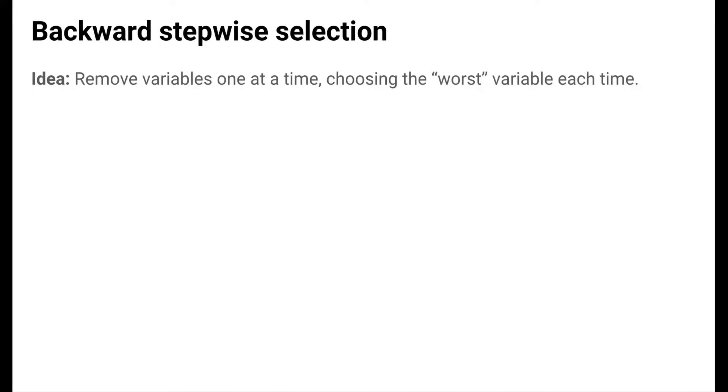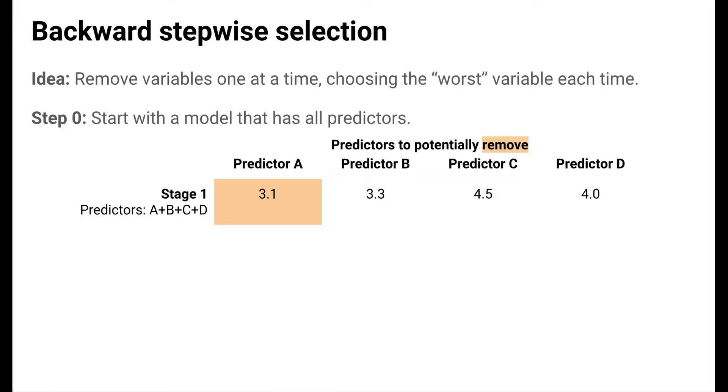Backward stepwise selection is similar to forward, but instead removes variables one at a time, each time removing the worst or least useful variable. Just like best, worst refers to the evaluation metric used. We start with a full model that has all predictors, and in the first stage we consider removing each one of the four predictors.